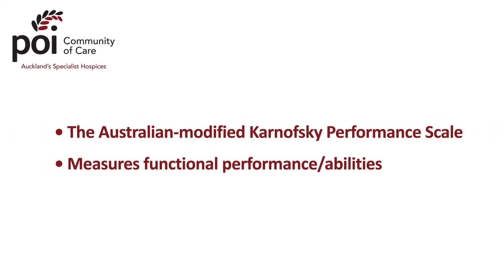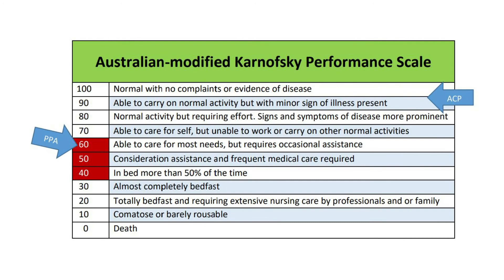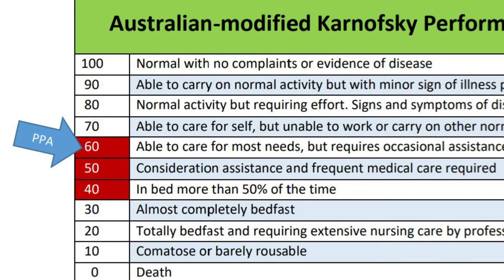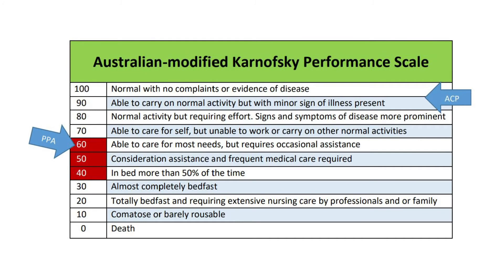AKPS — the Australian Modified Karnofsky Performance Scale. This is a measure of a person's performance status or ability to carry out their activities of daily living at a point in time. It is scored from 0 to 100 in intervals of 10. Scores are based on what the client can do for themselves without any assistance at the time of assessment.